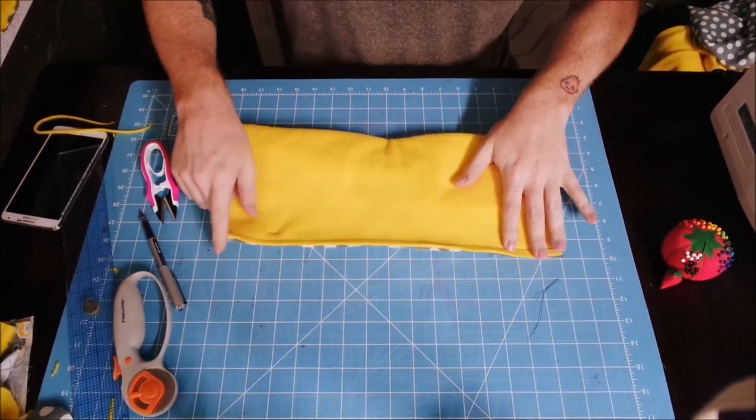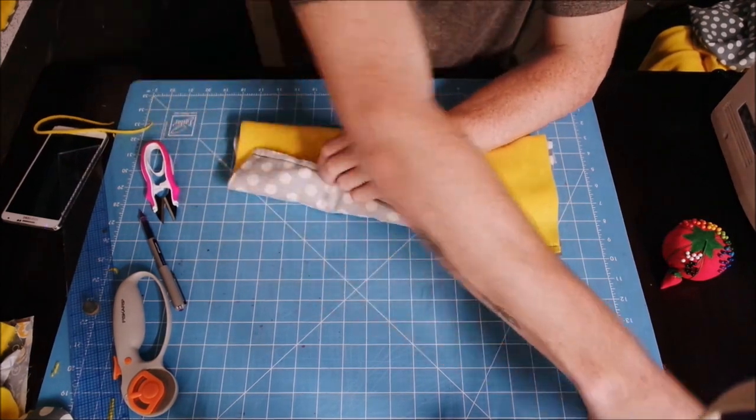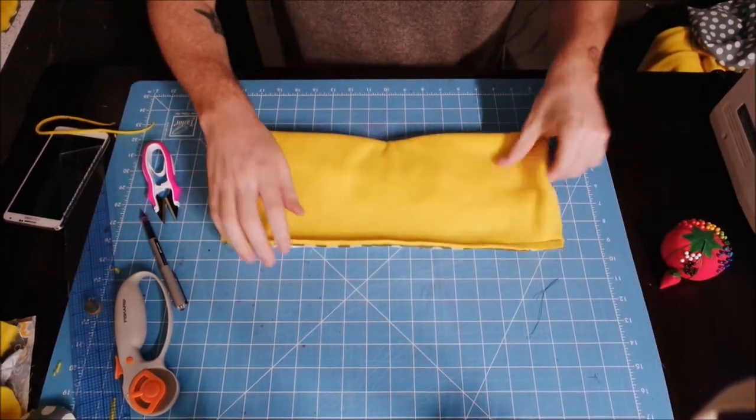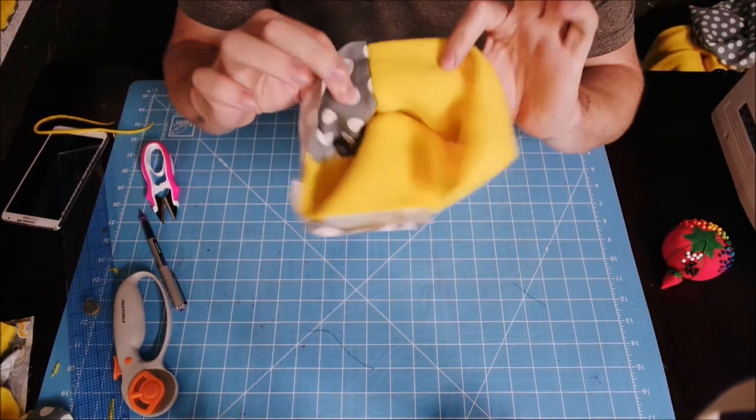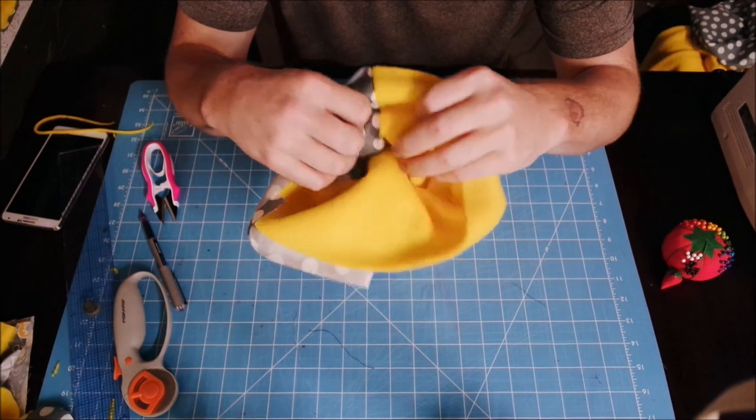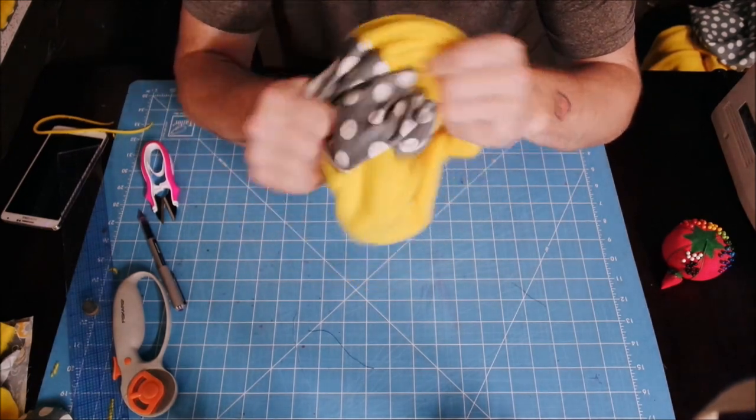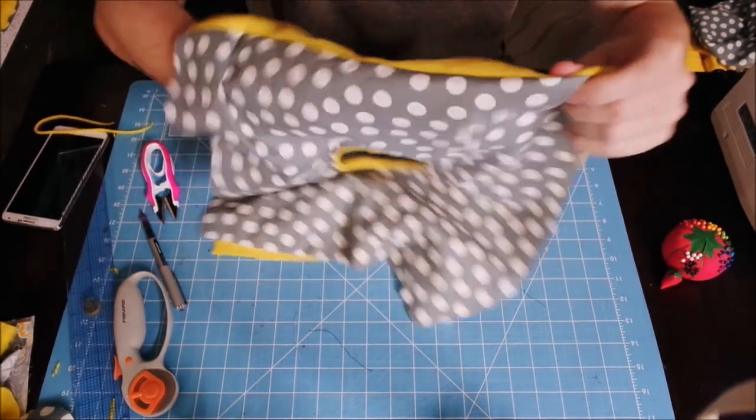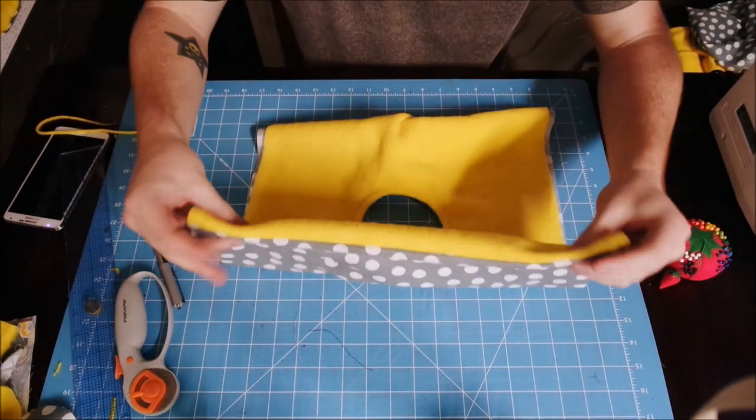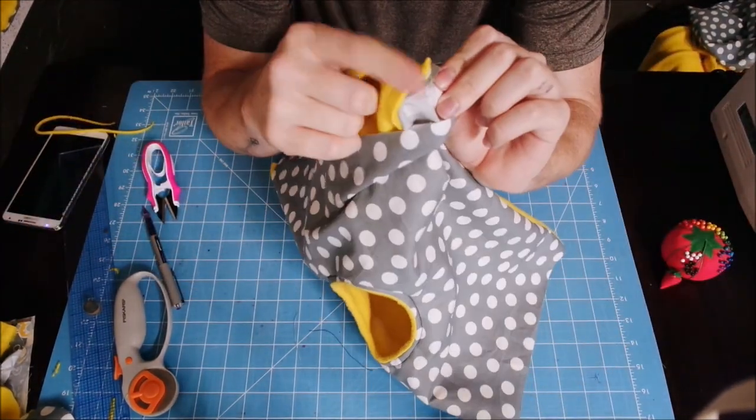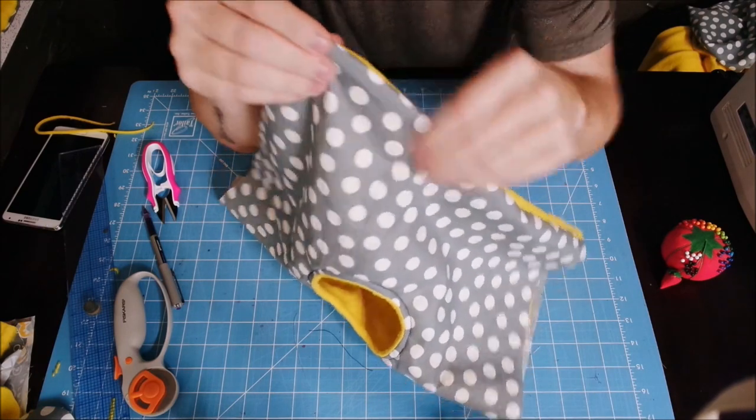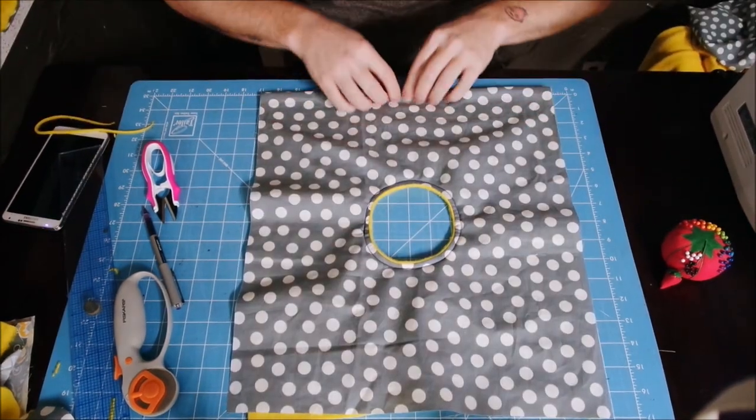Okay, so I went ahead and sewed along there. Oops, forgot to pull out that needle. I went ahead and sewed along there, and now we're going to open it and we're going to grab those two pieces that we sewed and we're just going to turn it inside out from there. So now that should be inside the liner where they won't be able to see it or get to it.